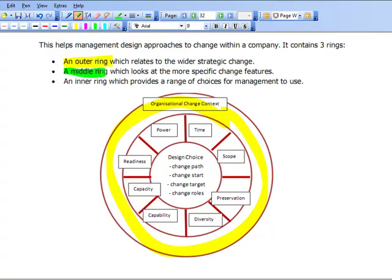We then look at a middle ring which looks at more specific areas. For example, it will look at time. How much time do we have? What's the scope? Is it a major change or a minor change?